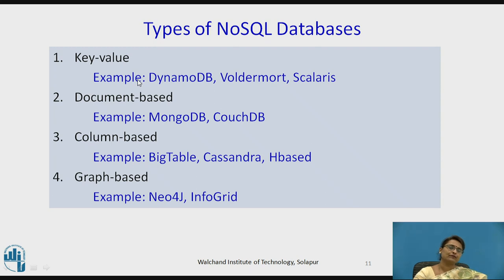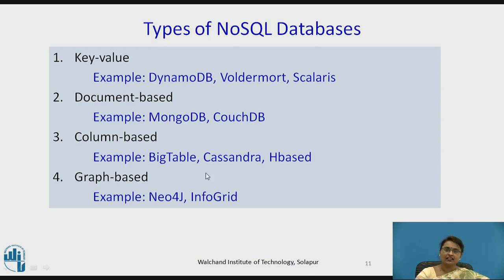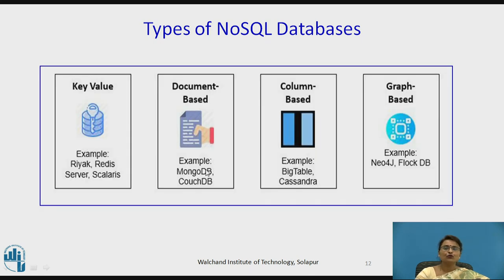Key-value format is used by DynamoDB, Voldemort, and Scalaris. Document-based databases are supported by MongoDB and CouchDB. Column-based data is supported by Bigtable, Cassandra, and HBase. Graph-based data is used by Neo4j and FlockDB. Key-value is also supported by Riak, Redis, and Scalaris among others.